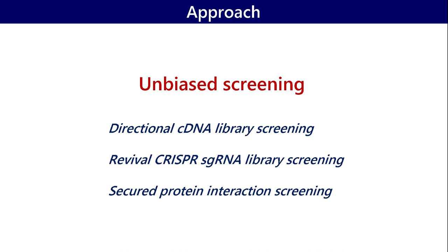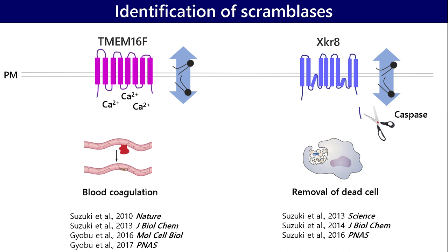So I started my research to identify scramblers. To identify scramblers, a specific approach is required. We utilized unbiased screening approaches, such as cDNA library screening, CRISPR short guide RNA library screening, and protein interaction screening. Using these techniques, we finally obtained the long-sought-after scramblers.